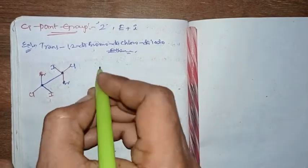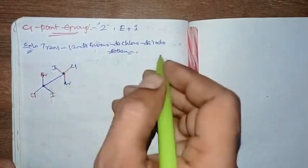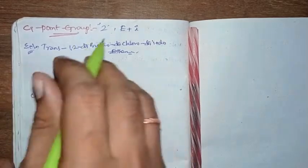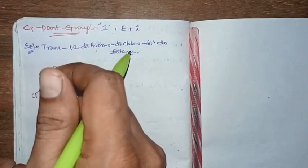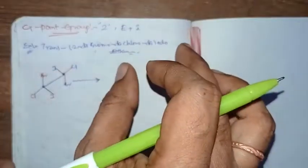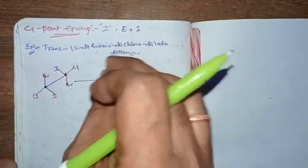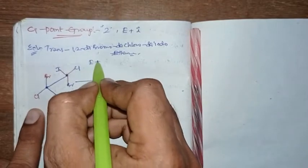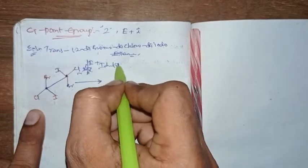So here, doing identity — 360 degrees of rotation or 0 degrees of rotation — identity will come. Every molecule will consist of identity. Doing any orientation of axis, if you do 360 degrees or 0 degrees of rotation, it generates the same structure. No change — the position of all the atoms will be the same, 100% same. So an identical configuration is generated.